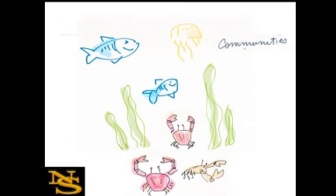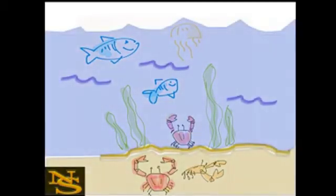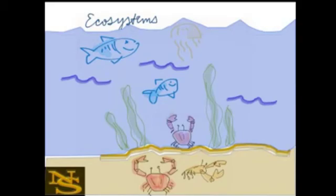When you include other elements of the environment, such as abiotic factors, the water, the sand, the atmosphere, the temperature, the nutrients, this is called an ecosystem. An ecosystem includes all the living organisms and nonliving matter in the habitat.